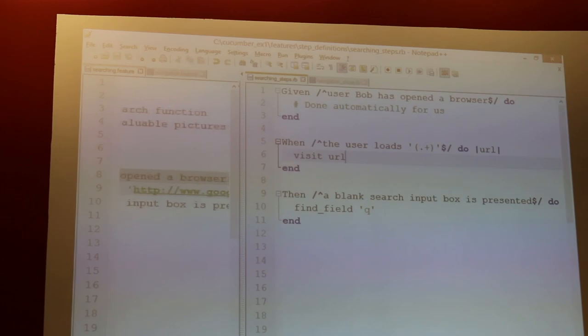And our then step, a blank search input box is presented. We're basically using the find field, and it'll search by ID, but this is flexible enough to use CSS expressions or XPath expressions. So if we didn't have a handy ID to use, an HTML ID, we could find this field based on any other property it has, the text within the element, or by other elements around this element. So it's pretty flexible. So I'll go ahead and run this. I can see what Cucumber does.